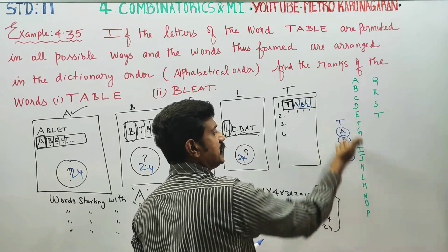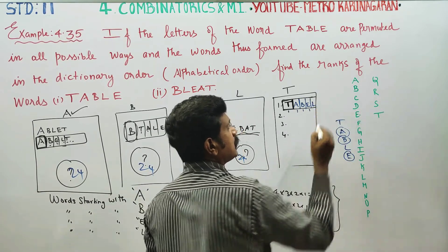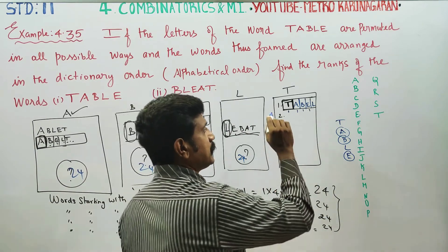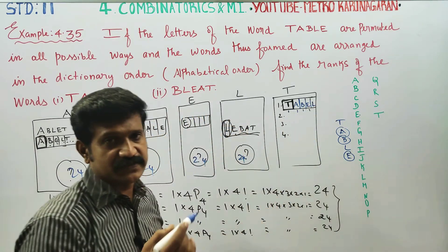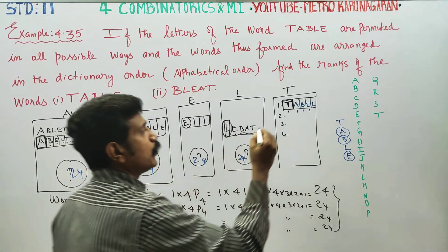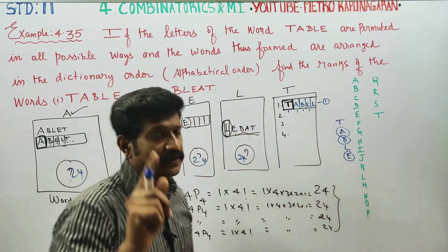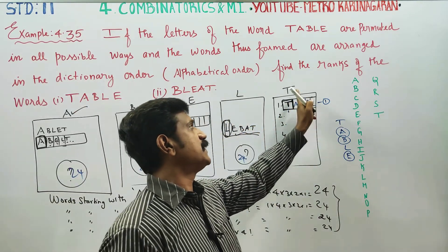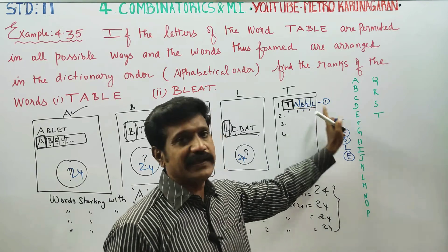G, H, I, J, K — L is not coming first. L is coming. This page is the first word of TABLE. T, A, B — E is not coming. First word counted. Words beginning with T: T is the first letter of TABLE.